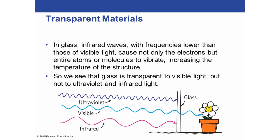As you can see in this picture, the visible light spectrum passes through glass — glass is transparent to visible light. However, ultraviolet light and infrared light, having higher and lower frequencies than visible light, do not pass through the glass. Visible light causes only electrons to vibrate, but ultraviolet and infrared light cause not only the electrons but the entire atoms or molecules to vibrate, generating heat. That ultraviolet and infrared light do not pass through glass.